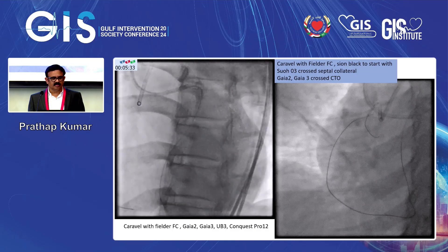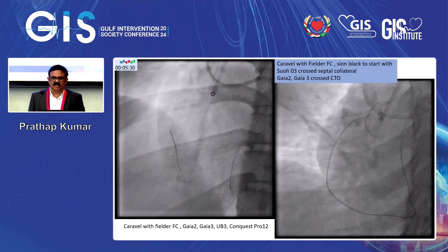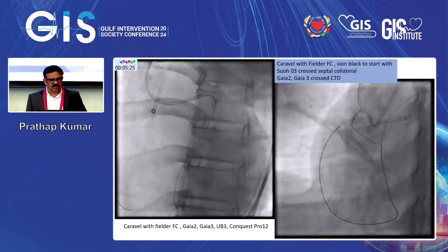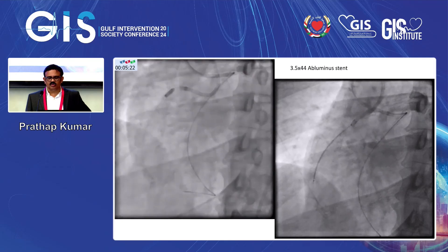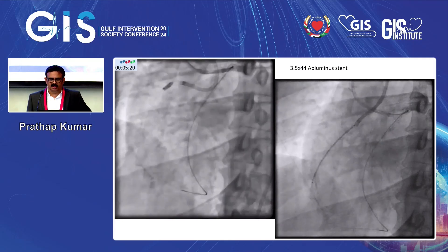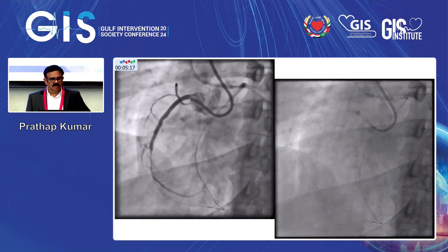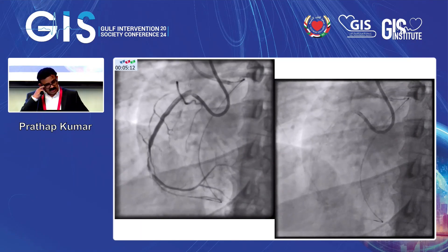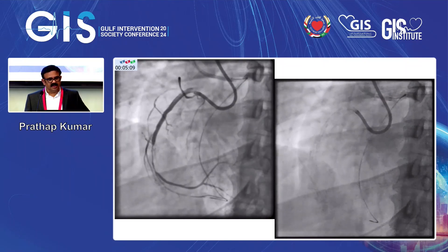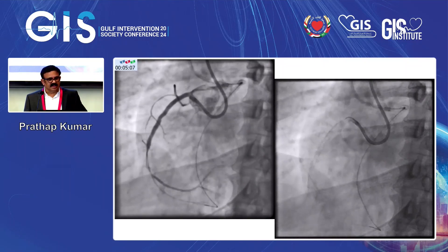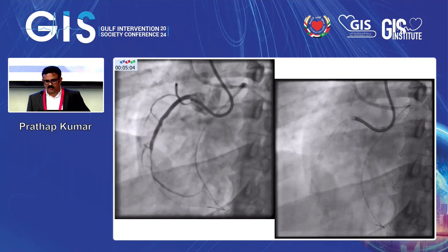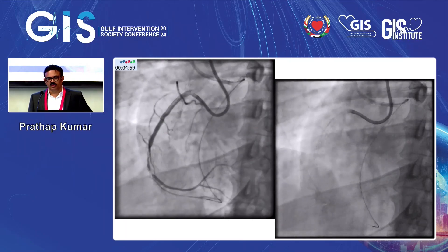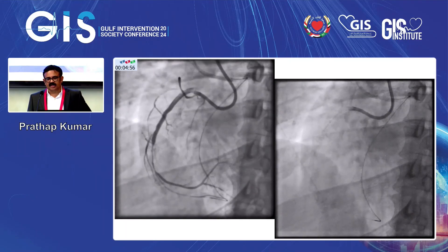We crossed — Caraville with filter FC, Cyan black to start with. Sukha3 crossed the septal collateral, Gaia2 wire, Gaia3 crossed the CTO anti-grade. We took a 3.5x44mm abluminal stent and dilated. There was a gap between distal stent and the bifurcation. My plan was to take a stent from the distal RCA to the PDA, but colleagues suggested taking the stent into the PLV.